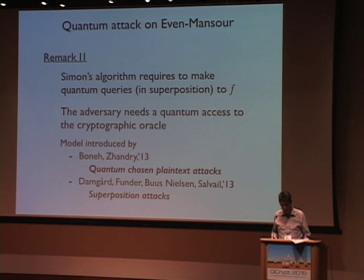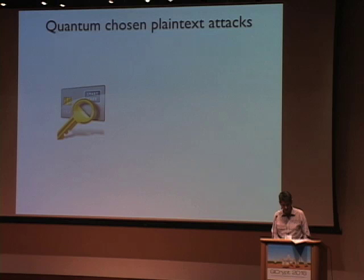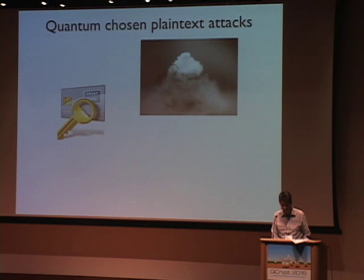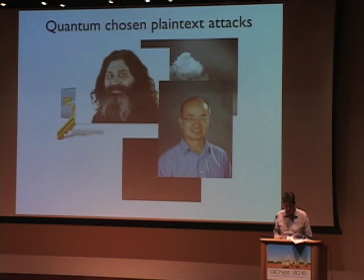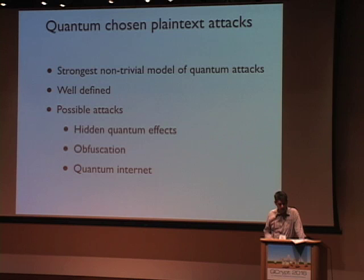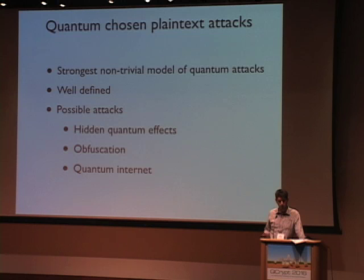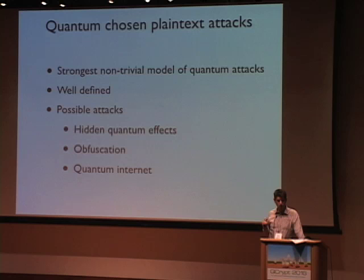In theory, this model is very interesting because it's very strong: it makes the adversary very strong, and therefore if you can prove security in this model, you would expect that any reasonable quantum model is secure. You can also derive practical attacks in some cases, such as classical obfuscation or in the quantum internet — for example, how would you discriminate between classical and quantum information there?